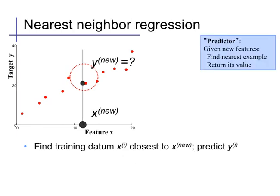The nearest neighbor predictor follows a very simple formula. We simply save all of the training data points — the red dots in the scatter plot — and our predictor follows a very simple procedure: given a new feature x, it looks in that data set, finds the data point with the closest value of x, and predicts the y value that was associated with that training point. So given x-new, we find the x_i training data point that's closest and predict its associated y_i.